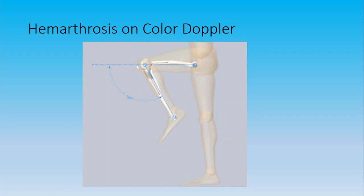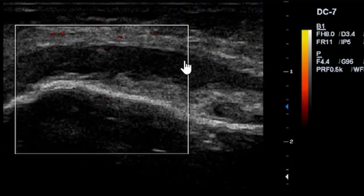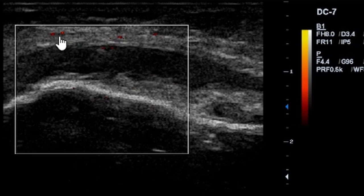Differentiation of bursitis from hemarthrosis — you can use your color Doppler. In most cases, if it is an inflammatory process, you see hyperemia or increased vascularity on the tendon or the muscles which are inflamed, in the anterior and posterior compartment or on the medial and lateral compartment. Here is a power Doppler interrogation to see if there is any sign of hyperemia, and after power Doppler interrogation, there is no significant color flow noted. These are just two artificial twinkles of color.